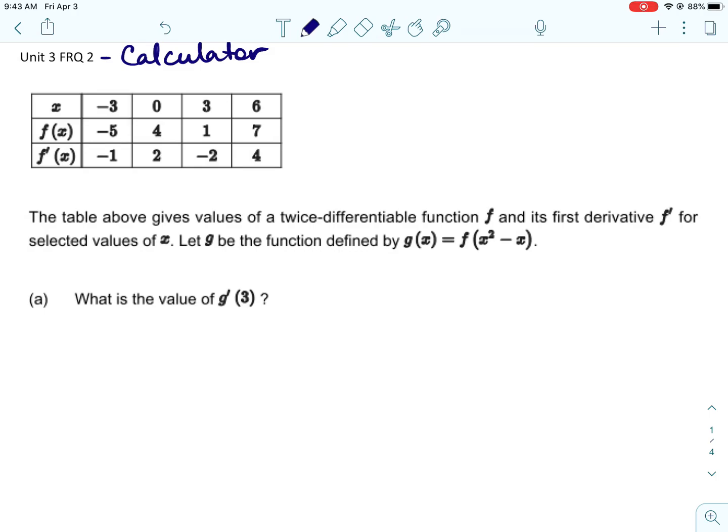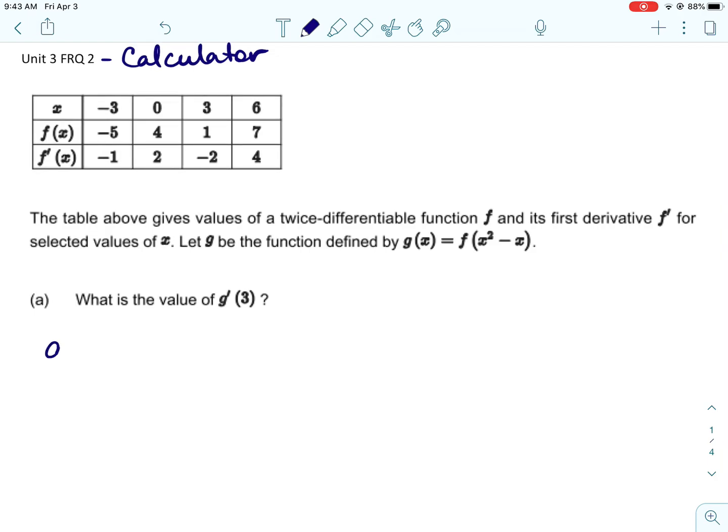Alright, so the second free response question for unit 3 is a calculator question, and it's similar to the one we just did at the beginning. We're given a twice-differentiable function called f and its first derivative f prime for selected values of x. We use f to represent a new function which is g, and then we're asked to find g prime of 3.